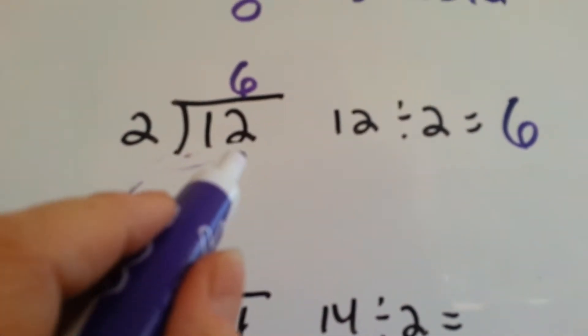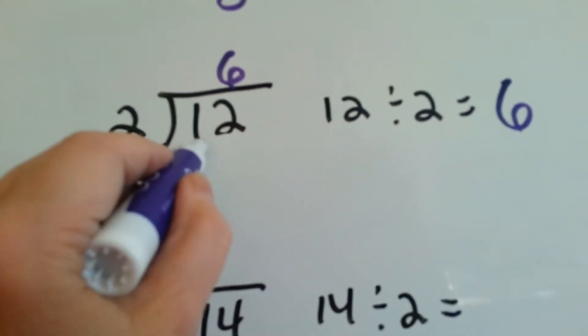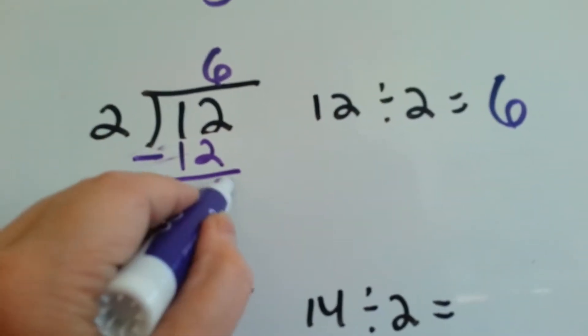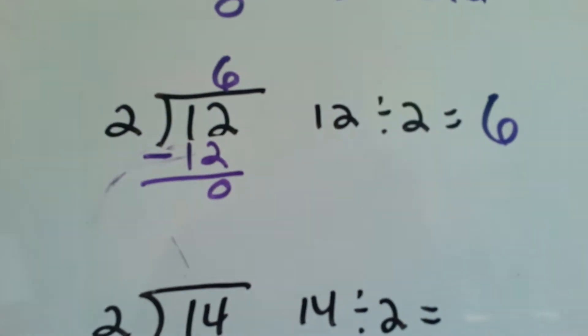2 goes into 12 6 times. So 2 times 6 is 12. We do our subtraction and we've got 0 left over.